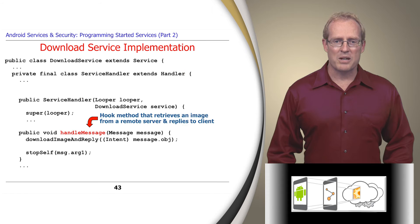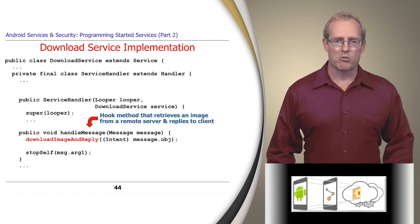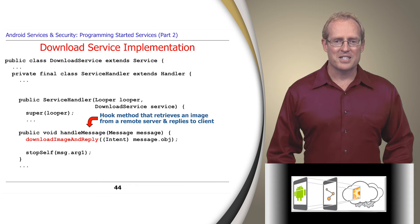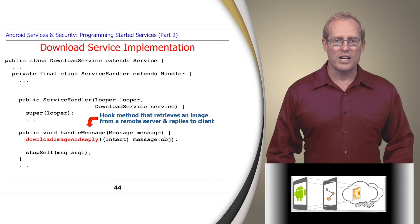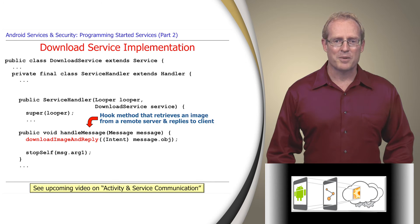The handleMessage hook method runs in the context of the handler thread. It calls the downloadImageAndReply method to retrieve an image from a remote server, store it in a file on the device, and send the path name for the file back to the download activity client via the Android Messenger interprocess communication mechanism, as shown in an upcoming video.